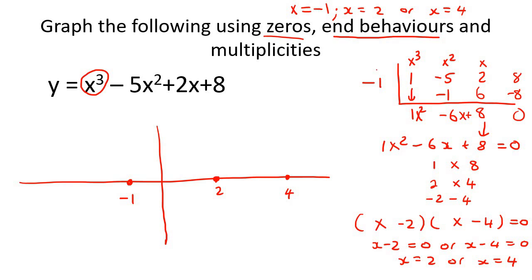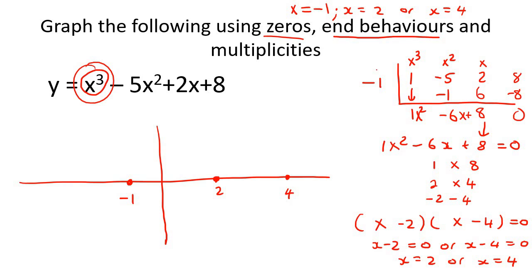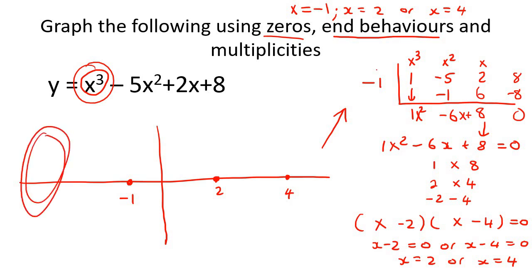To work out the end behavior, we look at the largest power, which is x³. On the right-hand side, infinity to the power of 3 is a huge positive number, so the graph goes up. On the left-hand side, negative infinity to the power of 3 is a negative number — negative times negative times negative gives a negative — so the graph goes down. There's our end behavior.